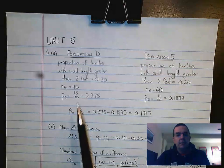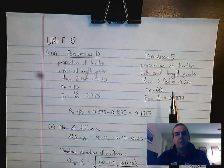They then take random samples of size 40 from D and 60 from E.